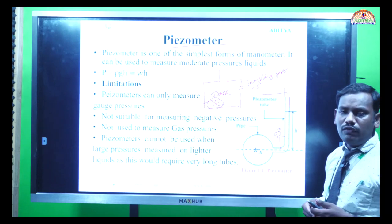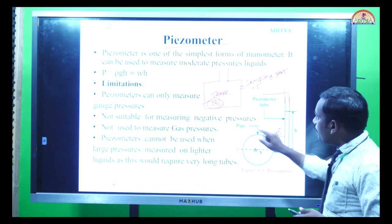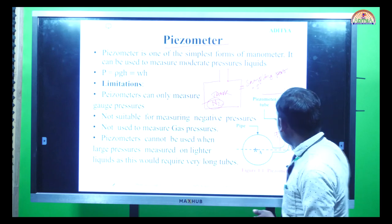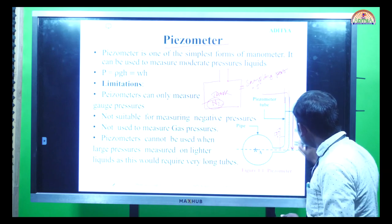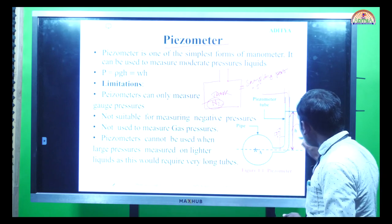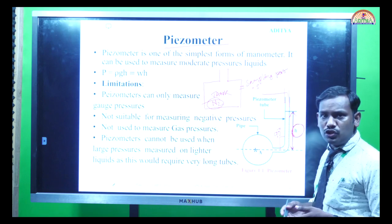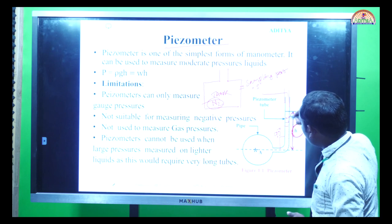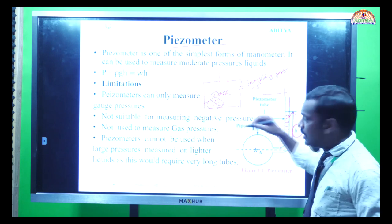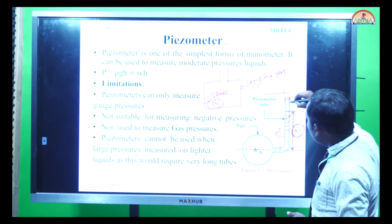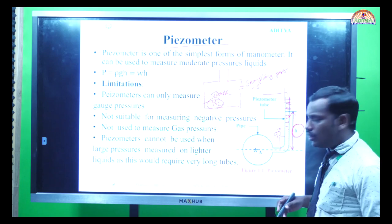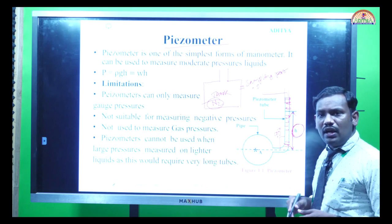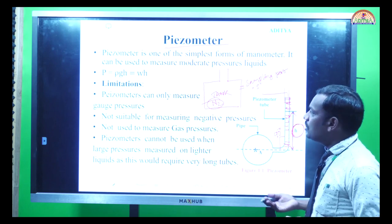Once the piezometer is attached, depending upon the amount of pressure present in the tank, the liquid will rise in the column. Higher the pressure in the storage tank, higher will be the height of the liquid rise. If the pressure inside is very high, the liquid will come to the brim of the tube; if the pressure is very low, the liquid stays at the bottom. Accordingly, we can measure the pressure.